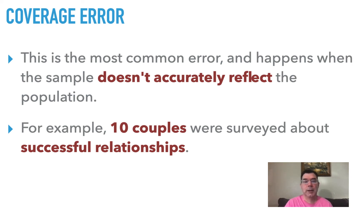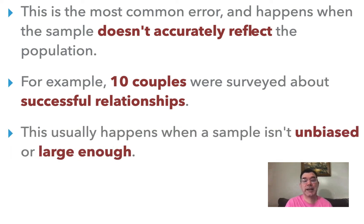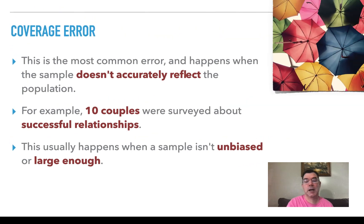There are single people and people in other situations that you would also need to include in that survey. This usually happens when your sample isn't unbiased or isn't large enough — 10 couples is not that many people to ask about successful relationships or anything for that matter. So you would want to ask a lot of people to get a lot of coverage, but you would also want to ask a variety of people so that your survey is unbiased.